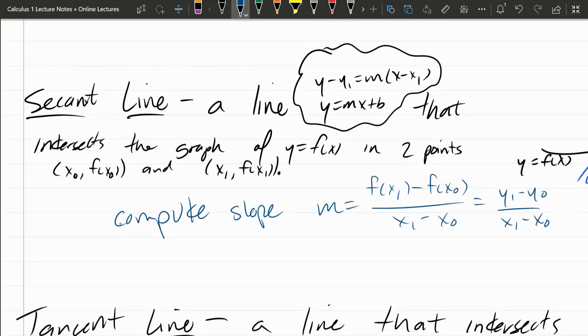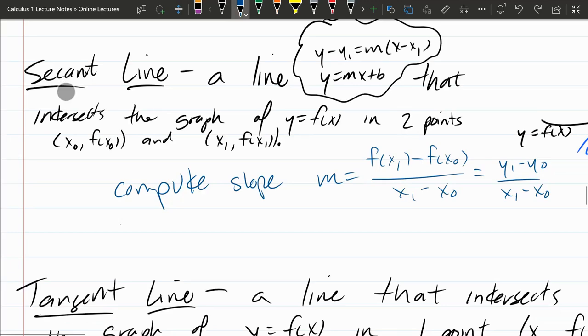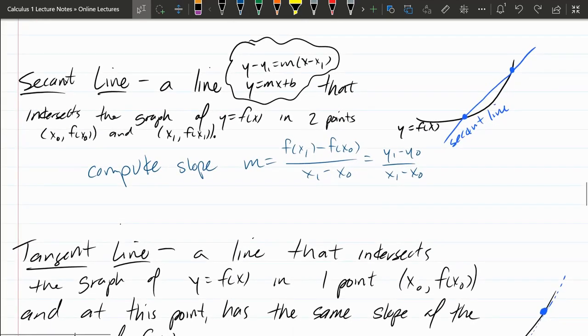Once you have that, you just plug into this first formula here. And you already have x1 and y1. Just plug those values in. You've just computed slope. And that's how you find the equation of a secant line. So that's for secants. And again, two points is the key for a secant.